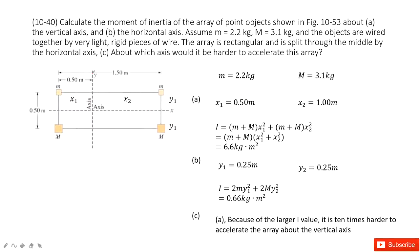The first one, it rotates along the y-axis. If it's along the y-axis, the distance from this mass to the fixed point x1 is 0.5 meter. From the fixed point to this mass is x2, 1 meter.